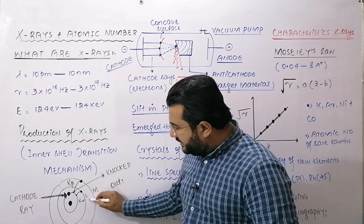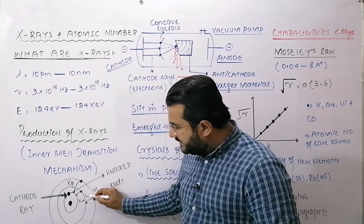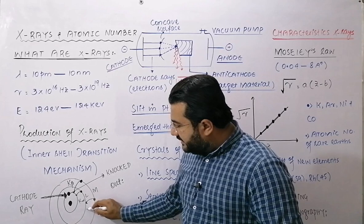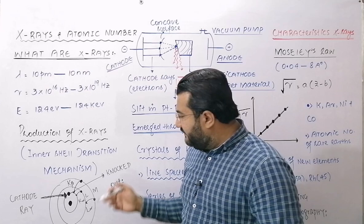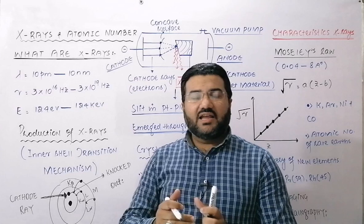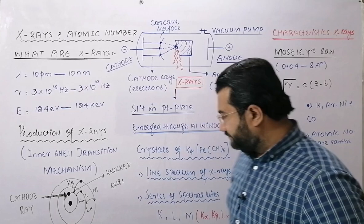When an electron falls from the M-shell to the L-shell to fill a vacancy in the L-shell, the L-beta line is produced. Similarly, when an electron from the N-shell (fourth shell) moves to fill a vacancy in the M-shell, the M-alpha and M-beta series of spectral lines are produced.